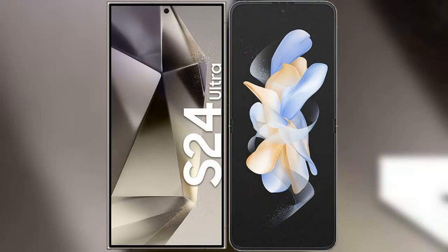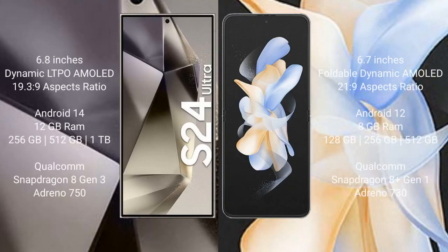I will compare the new Samsung Galaxy S24 Ultra with Samsung Galaxy Z Flip 4. The Samsung Galaxy S24 Ultra comes with a 6.8-inch Dynamic LTPO AMOLED display, while the Samsung Galaxy Z Flip 4 runs on a 6.7-inch Foldable Dynamic AMOLED display.